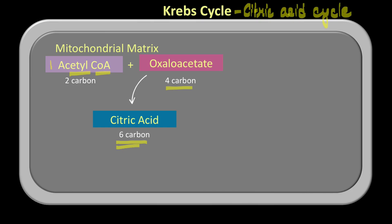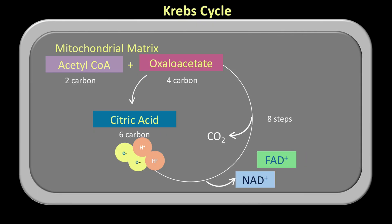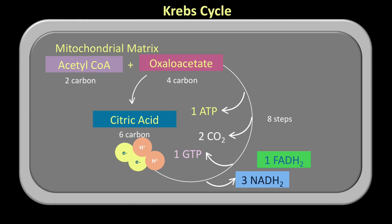In the process of this cycle, citric acid gets oxidized by giving up electrons and hydrogen to the electron carriers NAD+ and FAD+, in a series of eight steps. In some of these steps, carbon dioxide is given out. In some steps, ATP is also given out, as well as a molecule similar to ATP called guanosine triphosphate (GTP), which also acts as an energy currency.